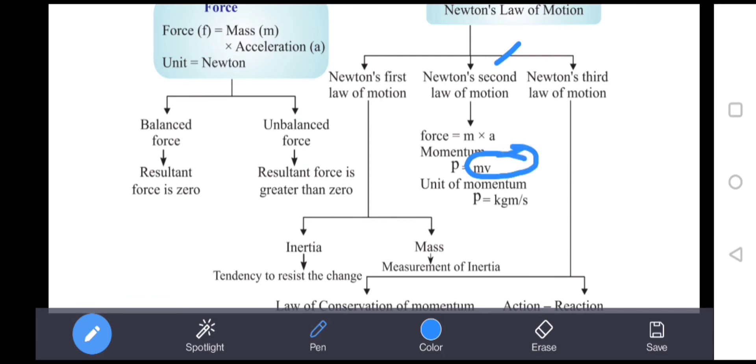Mass has unit kg, velocity has unit meter per second. Momentum, represented by P, has unit kg meter per second.